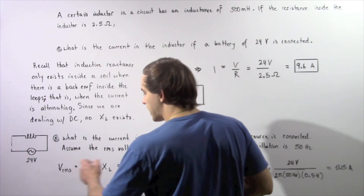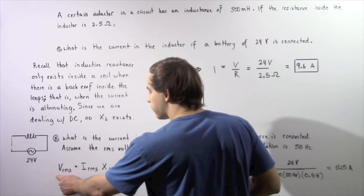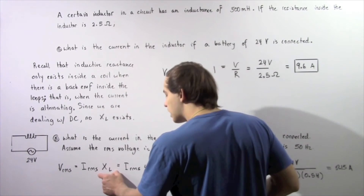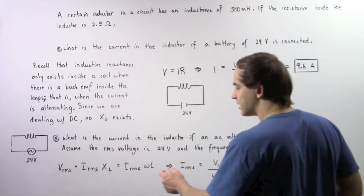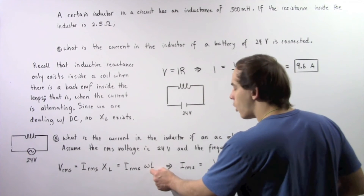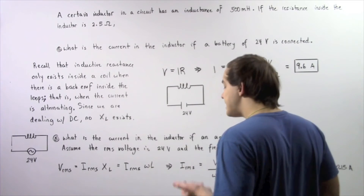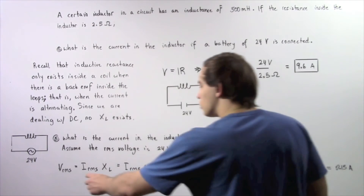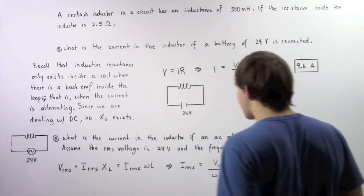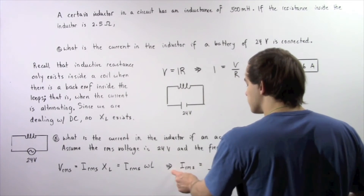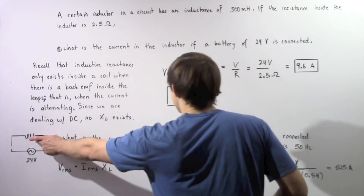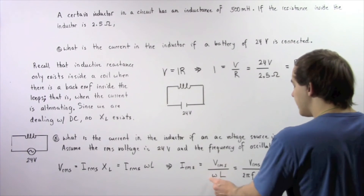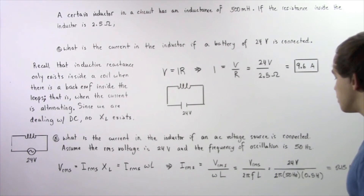In the previous lecture, we showed that the root mean square voltage equals the root mean square current multiplied by the inductive reactance. Inductive reactance equals the product of our angular frequency omega multiplied by our inductance. Omega itself equals 2π multiplied by the frequency. Rearranging and solving for our root mean square current: I_rms = V_rms / (ω × L), where ω = 2πf.